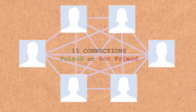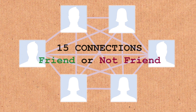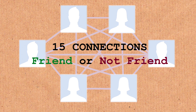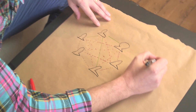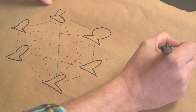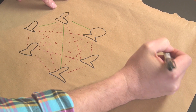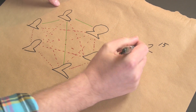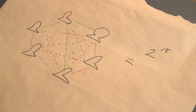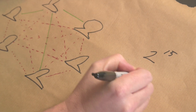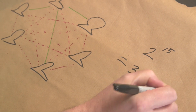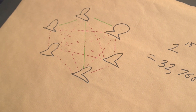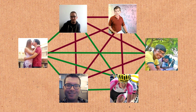Each connection is either friends or not friends. To count that, we go two to the power 15. That number is 32,768. So you've got 15 lines and each one can either be a friend or not a friend.